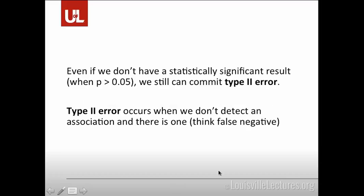Conversely, if you don't have statistically significant results, you can still commit type 2 error, which occurs when you don't detect an association when there really is one — the equivalent of a false negative. So if you have too small a sample size and you don't detect a significant difference between two groups, what could be happening is type 2 error, and not necessarily that there's no association.